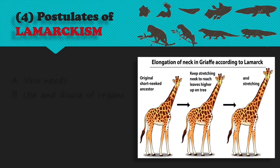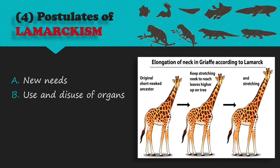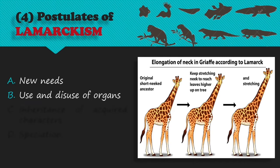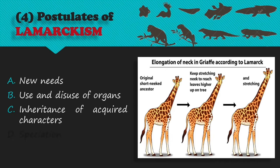Lamarckism is based on four postulates. First, changes in environmental factors like light, temperature, medium, food, air, or migration of animals lead to new needs in living organisms. To fulfill these new needs, organisms exert special efforts such as changes in habits or behavior. Second, use and disuse of organs: continuous and extra use of organs makes them more efficient, while continued disuse leads to degeneration and ultimately disappearance. Lamarckism is therefore also called the theory of use and disuse of organs. Third, inheritance of acquired characters: Lamarck believed acquired characters are heritable and transmitted to offspring so they are better suited to changed environmental conditions.